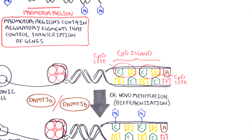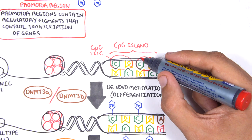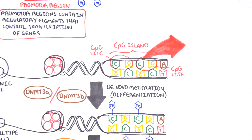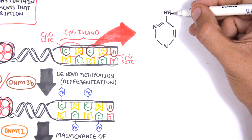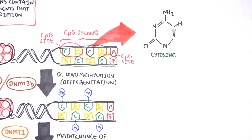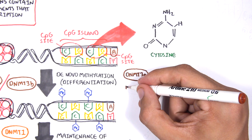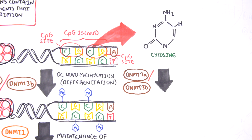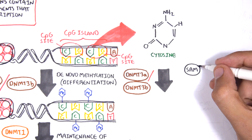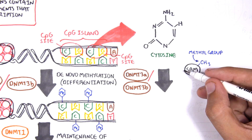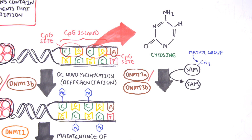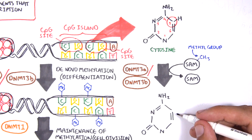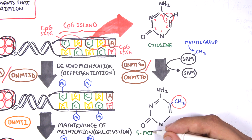To understand how CpG sites are methylated, let us zoom into this cytosine nucleotide here and look at its chemical structure. DNMT3A and DNMT3B are responsible for DNA methylation in early development. DNMT obtains the methyl group from a molecule called SAM, and the methyl group is added here, forming 5-methylcytosine.